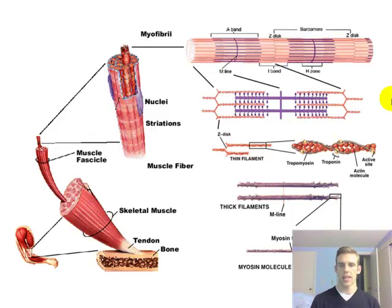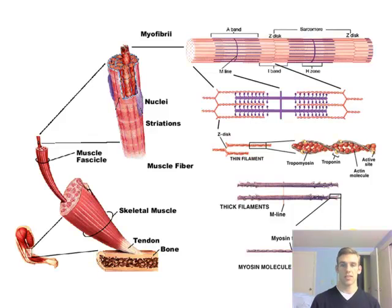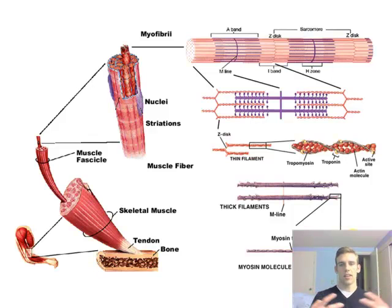Looking further at myosin and actin: on the right side of the screen we have an actin filament wrapped by troponin and tropomyosin, two regulatory proteins we'll discuss shortly. Myosin interacts with actin via a power stroke — a 10 nanometer displacement driven by ATP. The myosin head binds actin, goes through that 10 nanometer displacement, and causes the muscle to contract. While 10 nanometers isn't very far, having so many myosin heads makes the force and movement additive, producing a lot of force and velocity.